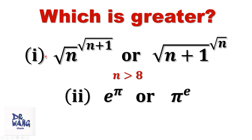In the first question, we have two numbers to compare. The two numbers are: square root of n to the power of square root of n plus 1, and square root of n plus 1 to the power of square root of n, where n is bigger than 8. In the second question, the two numbers are e to the power of pi, and pi to the power of e.